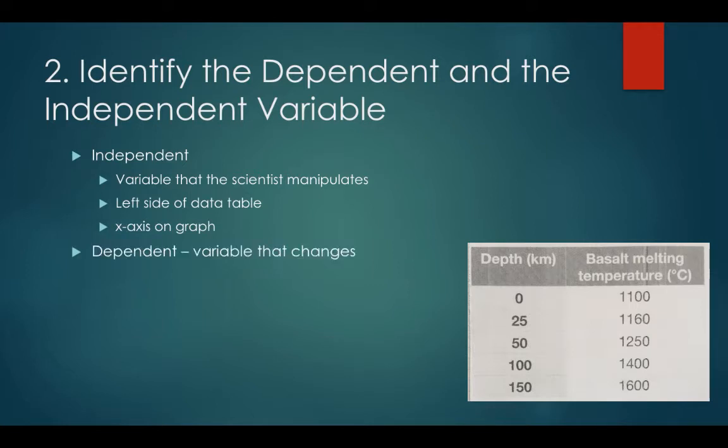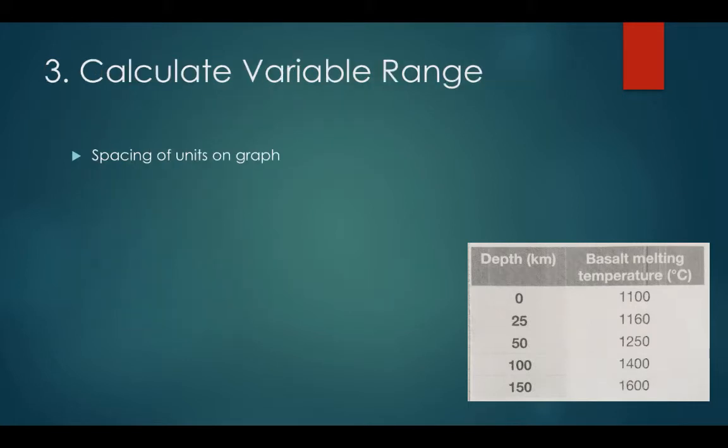The dependent variable changes because the independent variable is changing. It's usually found on the right side of the data table and it will be plotted on the y-axis of the graph. According to our data, it looks as depth in kilometers will be our x values, while basalt melting temperatures will be our y values.